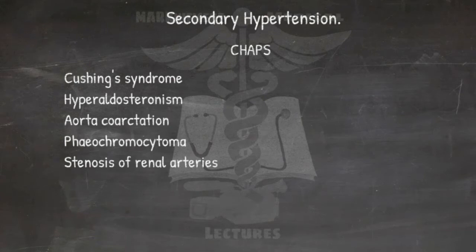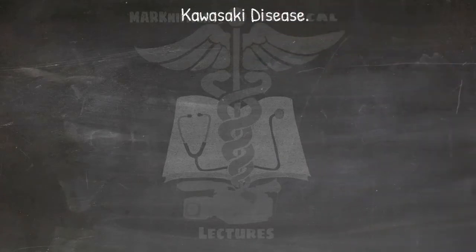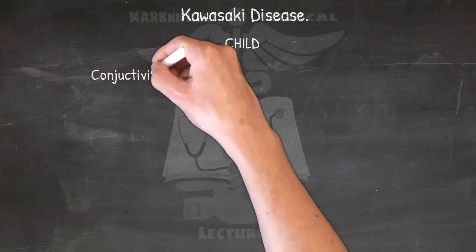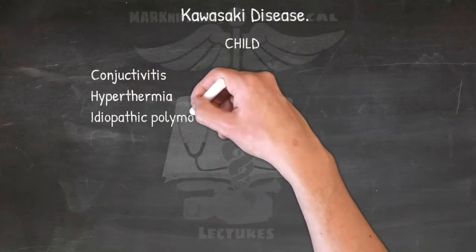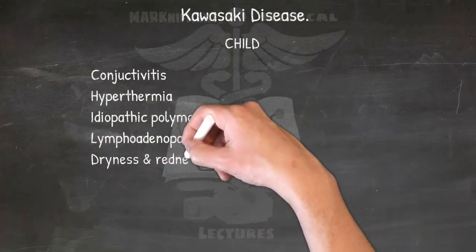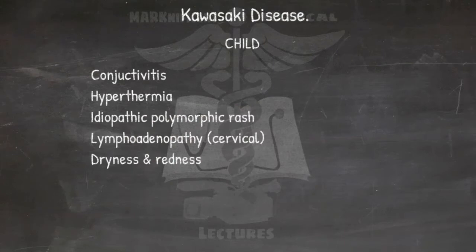Kawasaki disease: a form of vasculitis where blood vessels become inflamed throughout the body. The diagnostic criteria is remembered as CHILD, since it primarily affects children — five letters, five days, five-year-olds and above, and five out of six criteria for diagnosis: Conjunctivitis, Hypothermia, fever for five days, Idiopathic polymorphic rash, Lymphadenopathy (cervical), and Dryness and redness of eye, lips, mouth, palms, and soles.